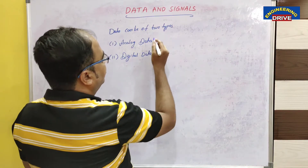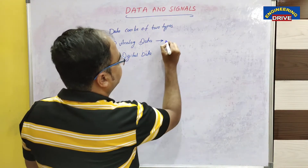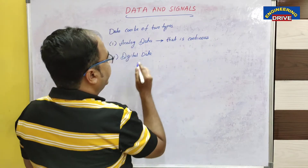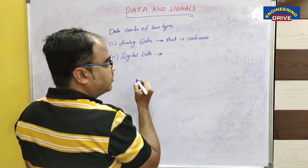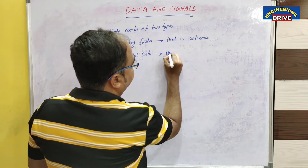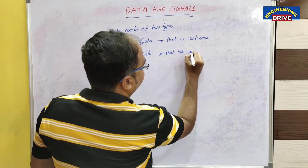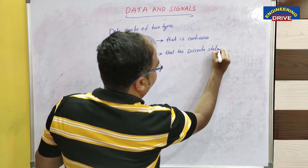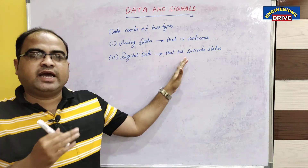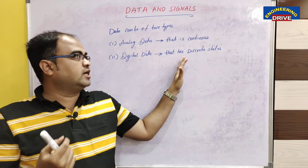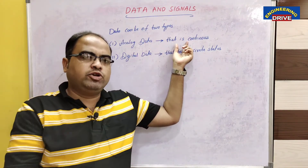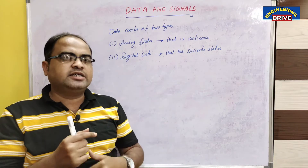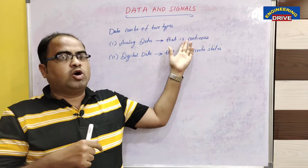So what is actually analog data? Analog data refers to information that is continuous. Whereas digital data refers to information that has discrete states. This is the main difference between analog data and digital data. Analog data is continuous form of information, whereas digital data is in a non-continuous manner, in different states.